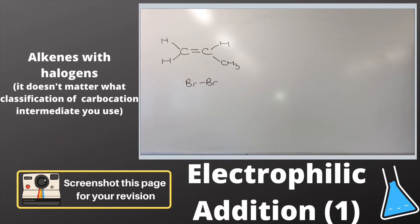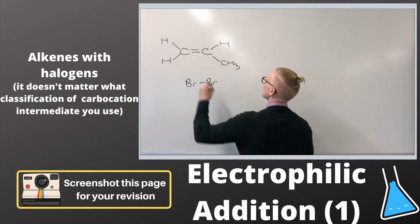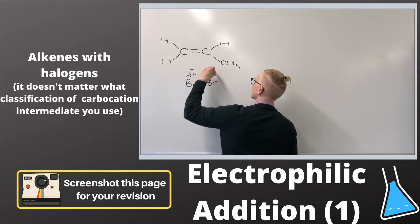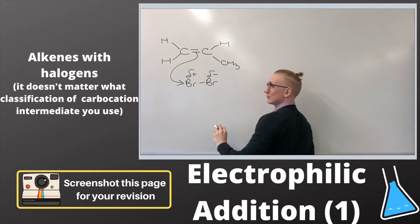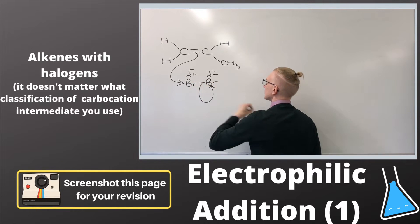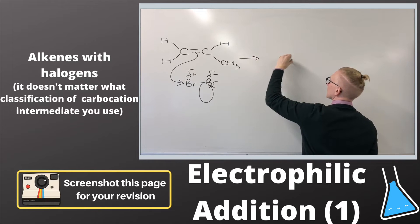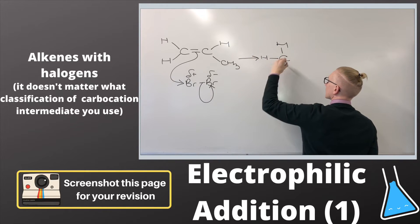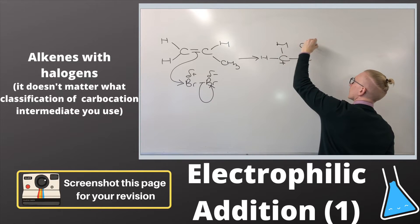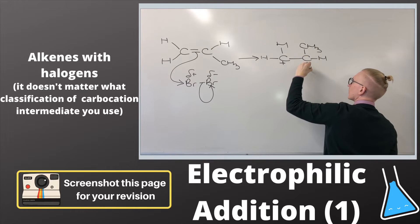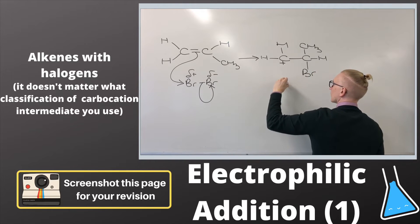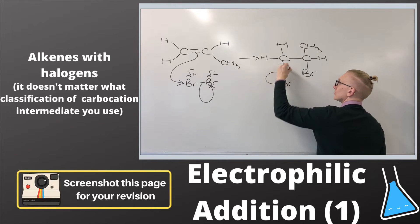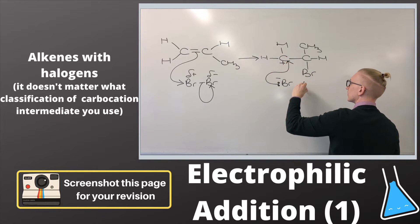Moving away from second year content and back into first year, we have electrophilic addition. For this version, we're looking at halogens reacting with alkene molecules. The halogen wouldn't normally have a dipole — in fact, the dipole on the halogen has been induced by the double bond in the alkene functional group. The intermediate here is a carbocation, but because we're using Br₂, Cl₂, or I₂ as our reagent, we don't need to worry about which carbocation we form — we just need to make sure it's one of the two carbons that was originally in the alkene double bond.